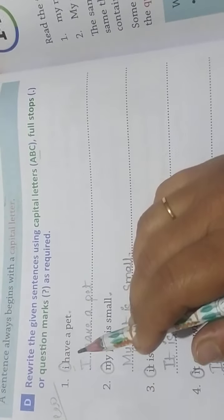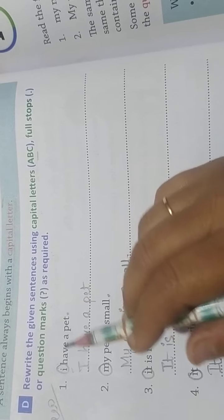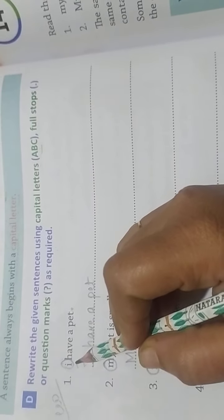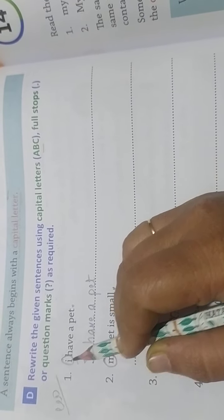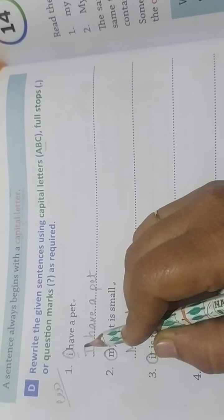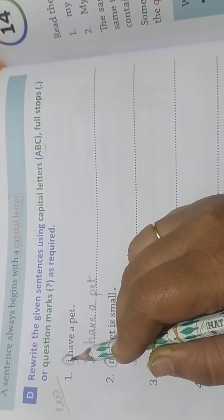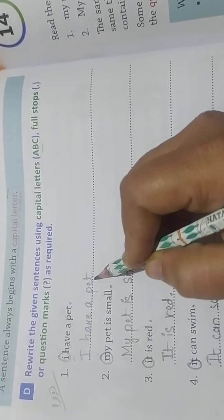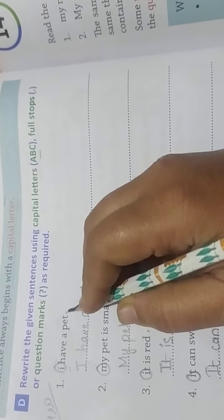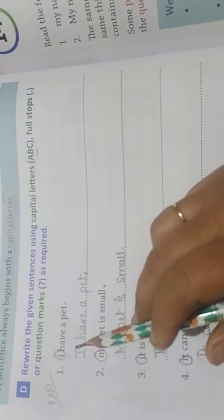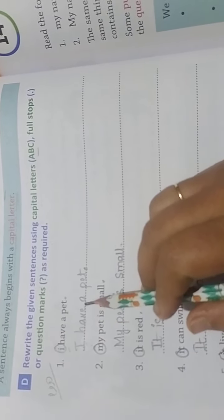Number 1: I have a pet. If there is a pet, then what will happen? Capital. Because when we start with a sentence, we will start with capital. So I - capital I - have a pet.